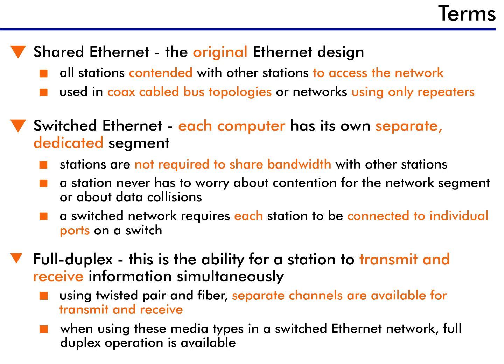The next term is switched Ethernet. This is a type of Ethernet network in which each computer has its own separate dedicated segment. Most Ethernet networks today are switched. Stations are not required to share bandwidth with other stations, meaning a station never has to worry about contention for the network segment or about data collisions. In a switched network, each station is connected to an individual switch port.